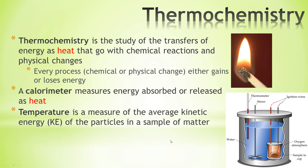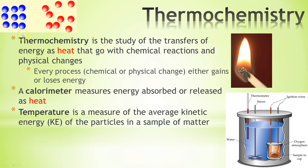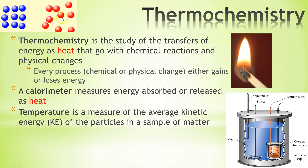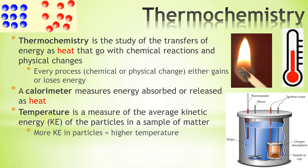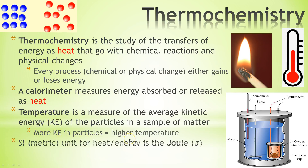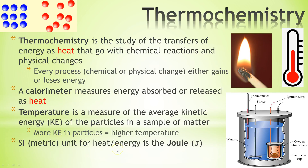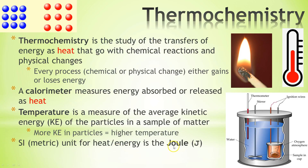Temperature is just a measure of the average kinetic energy of the particles in a sample of matter. Here we have a cold sample and here we have a hot sample. The biggest difference is that these particles are going to be moving faster, therefore they have more kinetic energy, and we measure this more kinetic energy as higher temperature. More KE in particles equals higher temperature. The metric unit for heat or energy is the Joule — capital J.